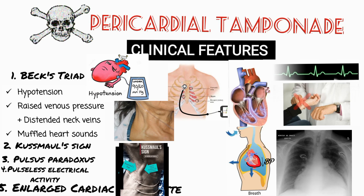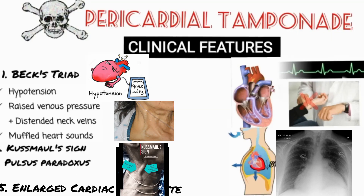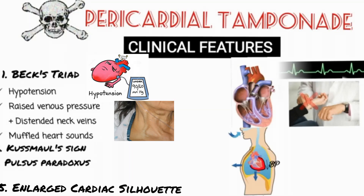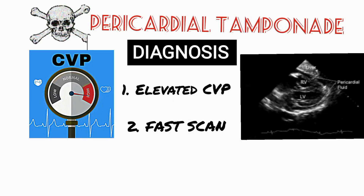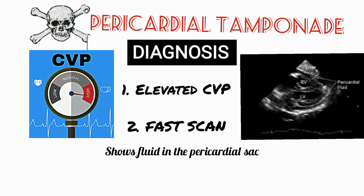On a chest x-ray, an enlarged cardiac silhouette is seen. For diagnosis, elevated central venous pressure and FAST scan are the most reliable. FAST scan shows the fluid in the pericardial sac.